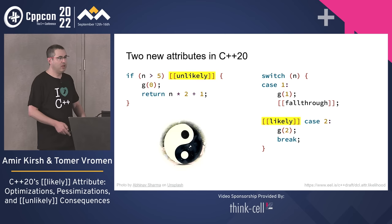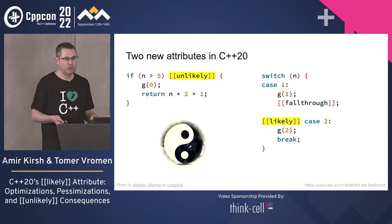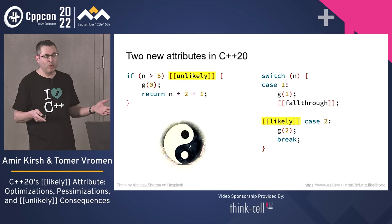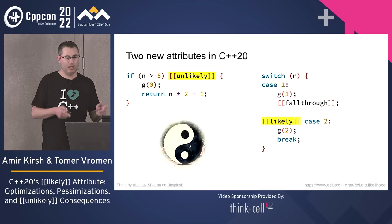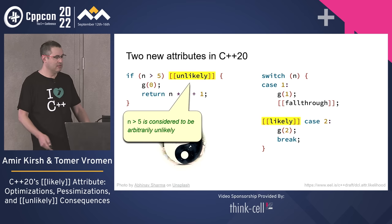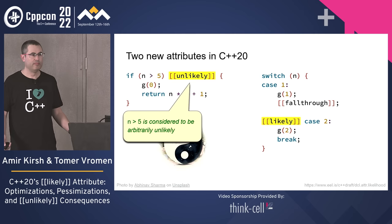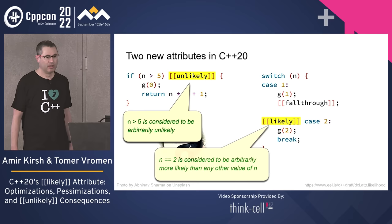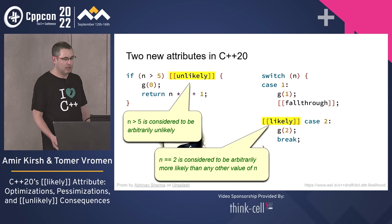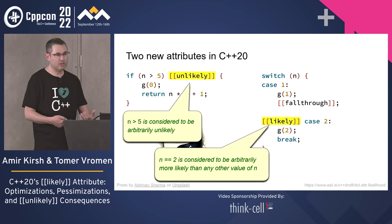C++20 added these two attributes. You can add the annotation [[likely]] or [[unlikely]] on an if statement, inside a switch on a specific case, or on a loop. In this example you can see that we say n bigger than five is considered to be — I'm using the word arbitrarily — unlikely. It should hint the compiler to do something, and we'll discuss what the compiler should do with that and what the options are.